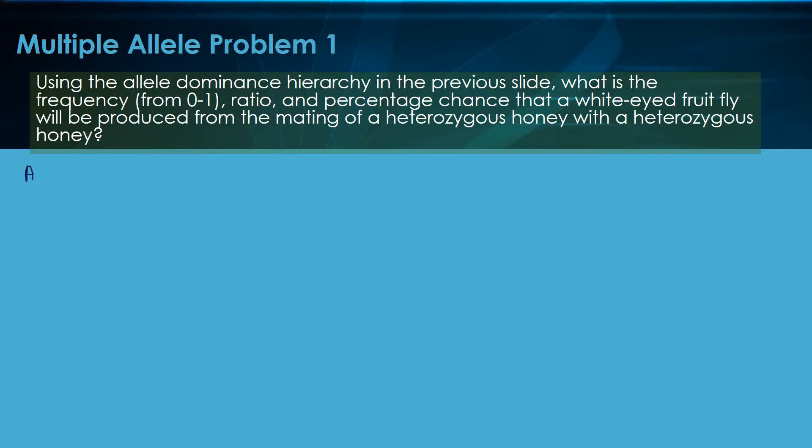I'm just going to focus on parents and offspring right now because I've got that information in the problem. We know our alleles from our previous slide. Make sure you've got those listed out in front of you right now. For offspring, we're looking for the chance of a white-eyed.